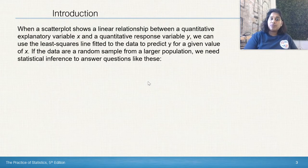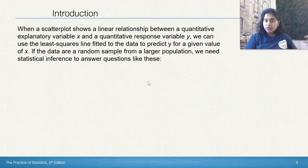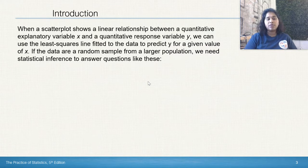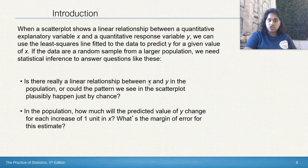When a scatter plot shows a linear relationship between a quantitative explanatory variable x and a quantitative response variable y, we can use the least squares line fitted to the data to predict y for a given value of x. If the data are a random sample from a larger population, we need statistical inference to answer these questions.